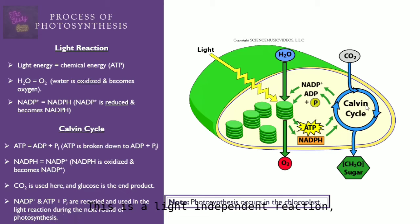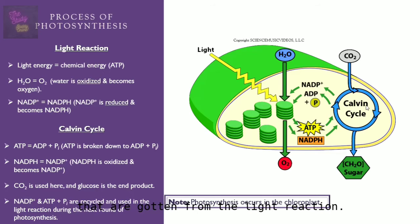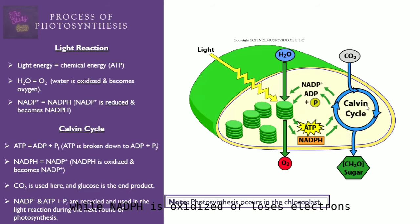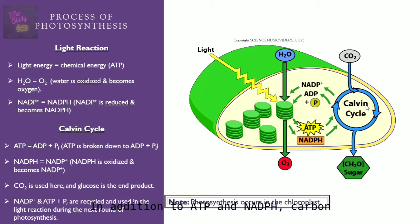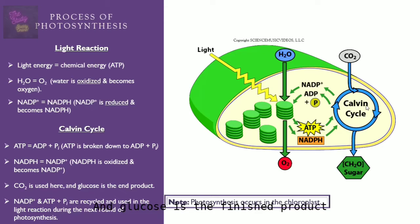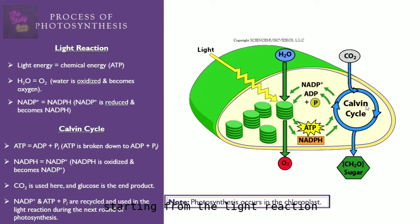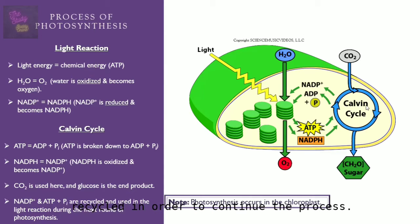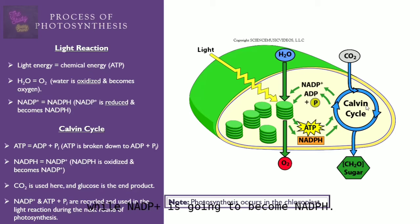After the light reaction is the Calvin cycle, which is a light-independent reaction — meaning it doesn't need light to happen. It uses the energy carriers ATP and NADPH from the light reaction. The ATP is broken down into ADP and inorganic phosphate, while NADPH is oxidized and becomes NADP+ again. Carbon dioxide is also required for the Calvin cycle, and glucose is the finished product. After the Calvin cycle, photosynthesis repeats from the light reaction, with NADP+ and ADP being recycled.